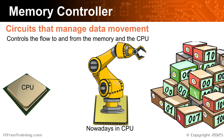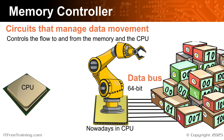The memory controller has a 64-bit data bus to the memory modules. If your computer has a dual channel, it will have two 64-bit data buses. If it has a triple channel, it will have three. The bus effectively moves data to and from the memory controller and the memory modules. In order to determine what data is to be accessed, the CPU has an address bus. Each byte the computer can access is assigned a number, and the address bus is set to this number so the memory controller knows what data it needs to retrieve.